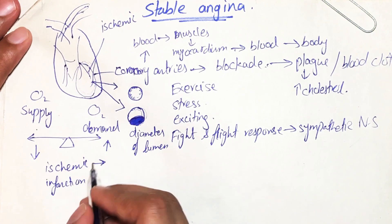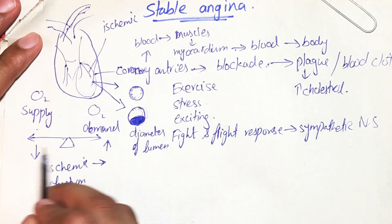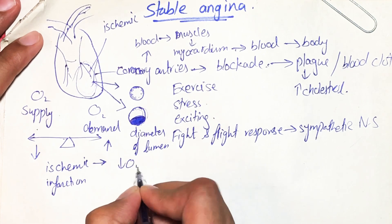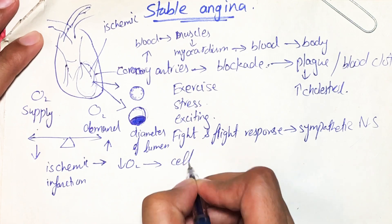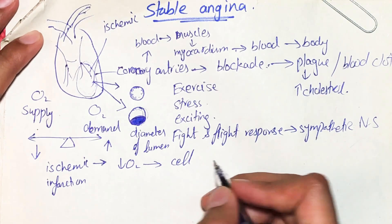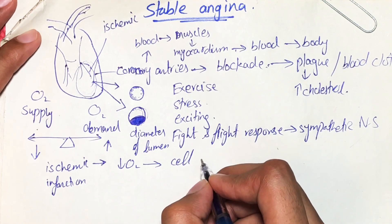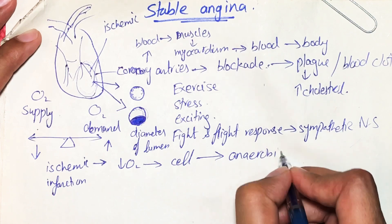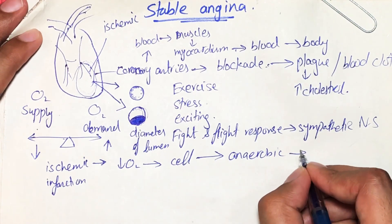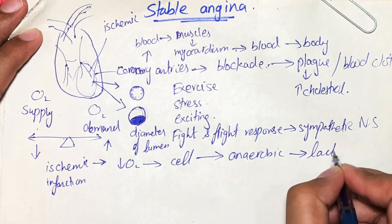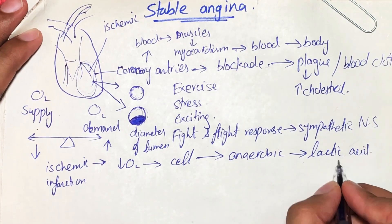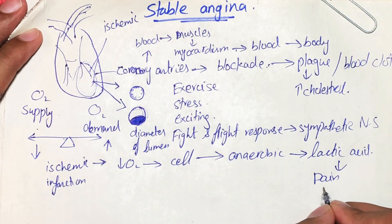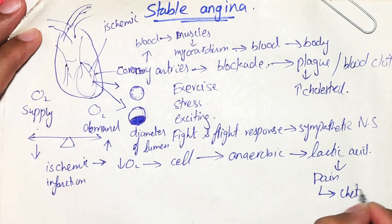In ischemia there is an imbalance between oxygen demand and oxygen supply, so you have less oxygen. Cells that need oxygen for their metabolism will shift to anaerobic conditions. In anaerobic conditions there is accumulation of lactic acid, and lactic acid causes the pain — which is what is felt as chest pain.